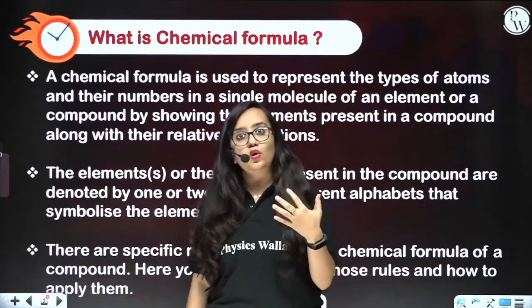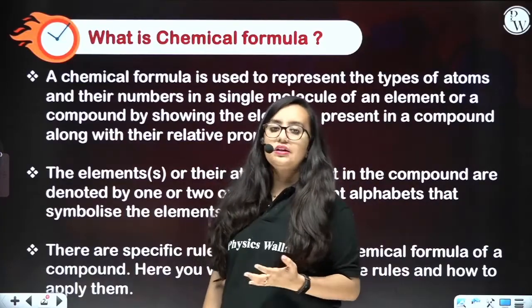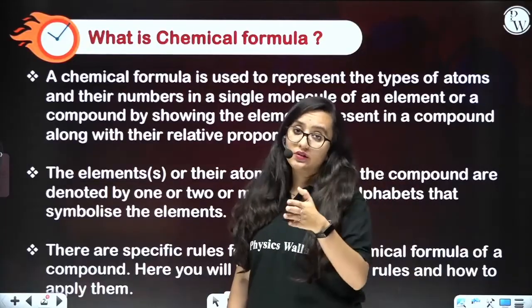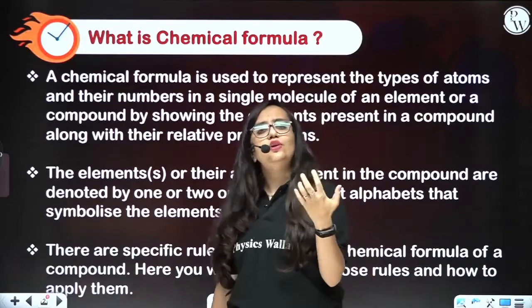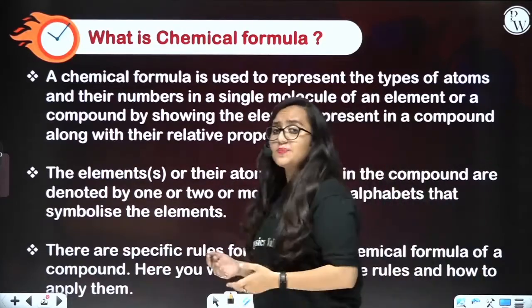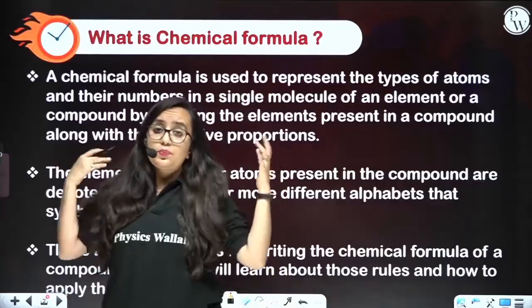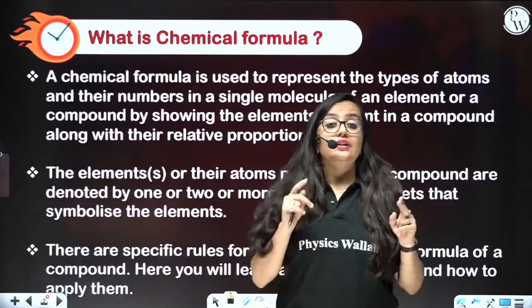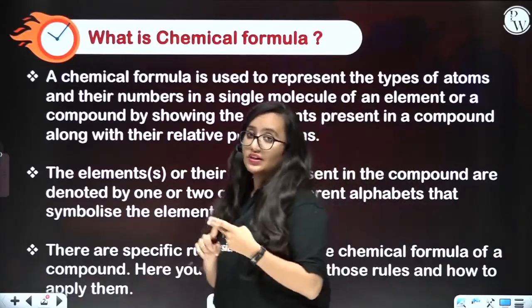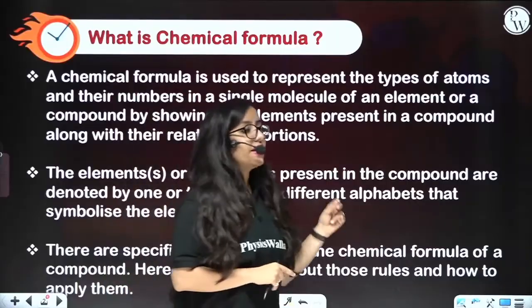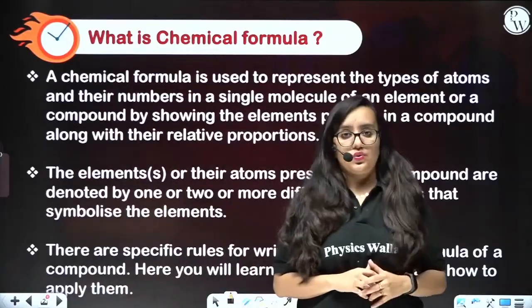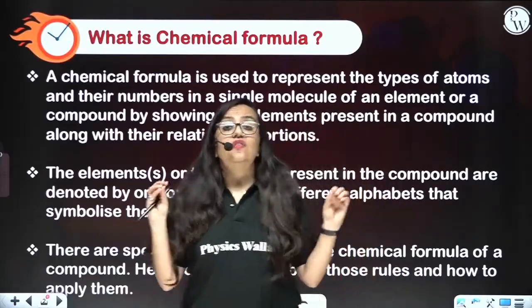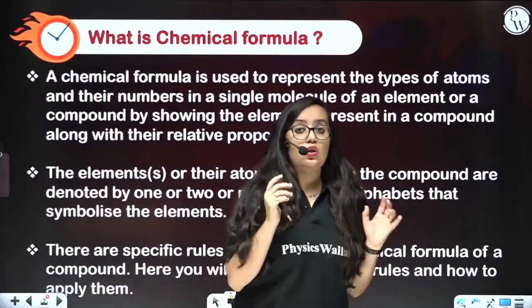If you know the number of elements, it is not enough, because you must also know their proportion. Like if I talk about water — water is H₂O. The proportion of hydrogen to oxygen is 2:1. When I say H₂O, you immediately know there are two elements — hydrogen and oxygen — present in a 2:1 ratio. That is how a chemical formula is very informative.